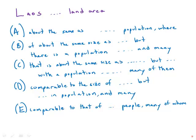Answer choice A: 'a land area about the same as Great Britain.' That's an example of an incorrect comparison on the GMAT because we're comparing the nation Great Britain to the land area of Laos — so that just doesn't work.